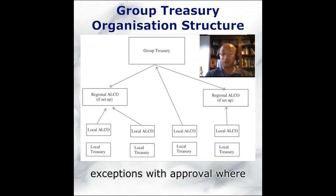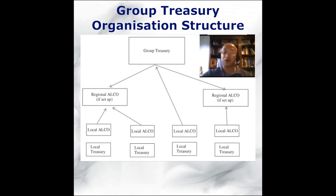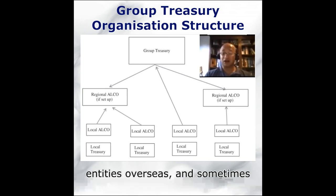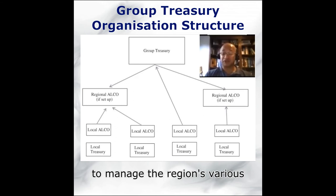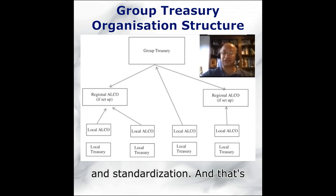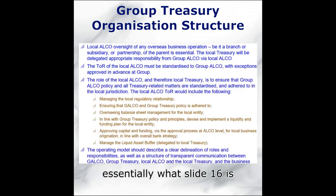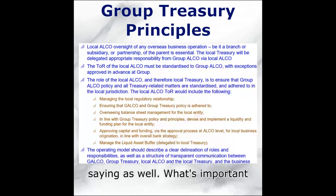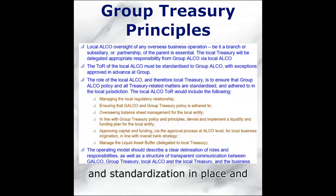Also having exceptions with approval where required. If you have sufficient breadth and depth across a number of entities overseas, then sometimes you'll set up a regional ALCO to manage the region's various local ALCOs. So a local treasury function — whether it's a branch or subsidiary — has a local ALCO overseeing it under group treasury and group ALCO policy and standardization.